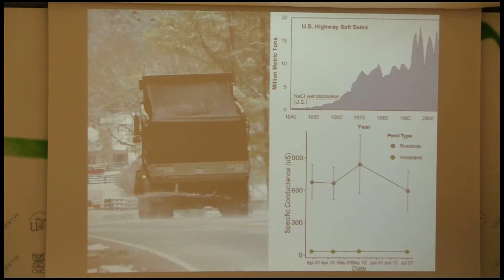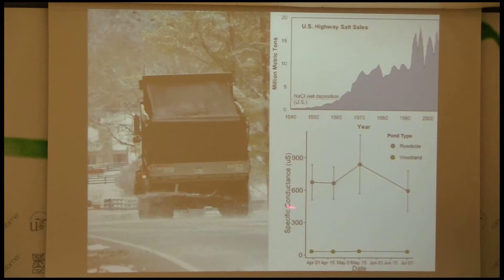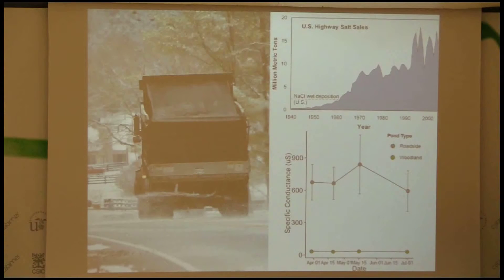In freshwater systems, these are the ponds we've been studying — roadside ponds and woodland ponds. The conductance of these ponds is higher near roads, and this is data going from April to July. Even after that flush of melt runoff from winter, these levels are higher than typical ponds these animals live in. These salts are integrated into sediments and have a persistent effect; they could be much higher right after winter thaws as well.